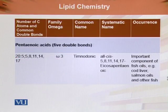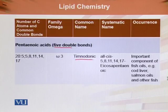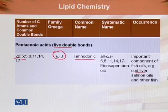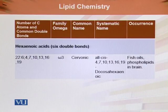Next is the pentaenoic acid having five double bonds, which is eicosapentaenoic acid (EPA). This is an omega-3 fatty acid, again a 20-carbon compound with five double bonds. It is obtained primarily from cod liver oil, salmon fish oil, and various other fish oils.